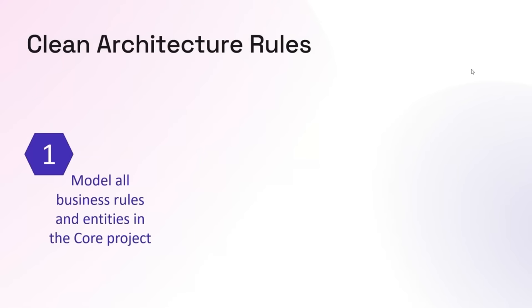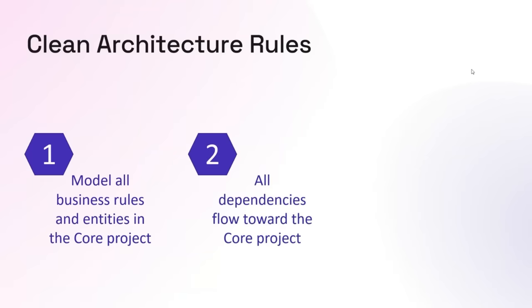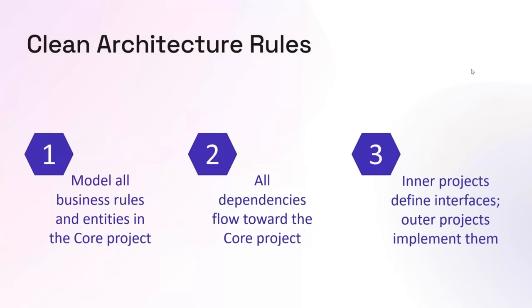Now let's talk about the rules of clean architecture. The first rule is to model all your business rules and entities inside the core project — that's your domain model. The second rule is that all dependencies need to flow toward the core project; nothing goes from core toward your UI, infrastructure, or external dependencies. The third rule, which follows from number two, is that your inner projects define interfaces that your outer projects then implement. That's how we use the dependency inversion principle to support code that depends inward rather than outward.